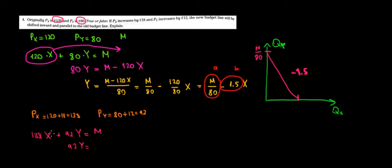So let's leave Y on one side only, just like before. 92Y, this one, take it to the right, becomes M minus 138X.